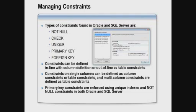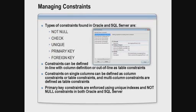When it comes to managing constraints, there are five typical types of constraints found in both SQL Server and Oracle: NOT NULL, CHECK, UNIQUE, PRIMARY KEY, and FOREIGN KEY. Constraints can be defined inline together with the column definition — that applies to any single-column constraints — or out of line as table constraints. Any multi-column constraint has to be defined as an out-of-line table constraint. Primary key and unique constraints are enforced by using indexes.